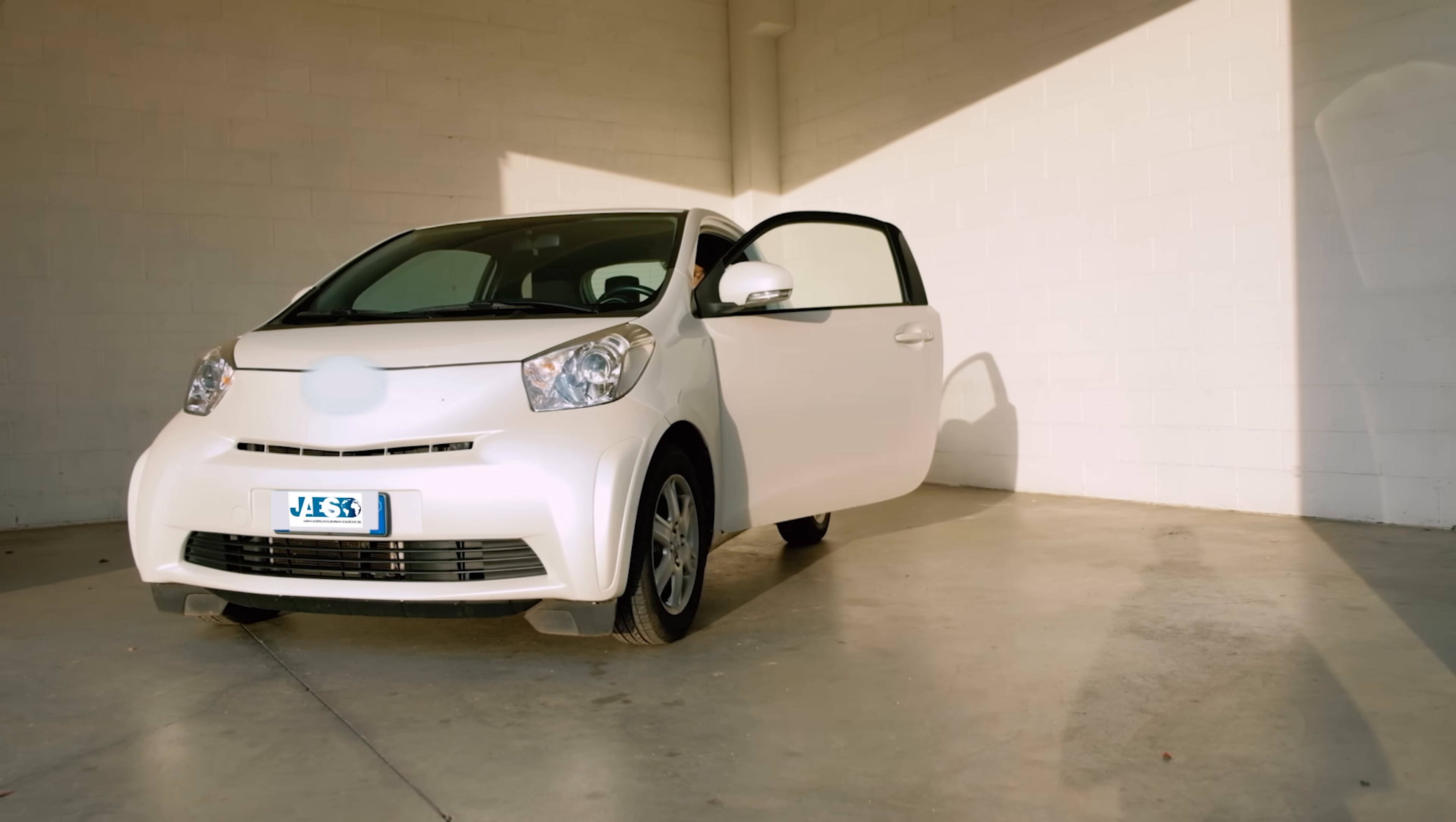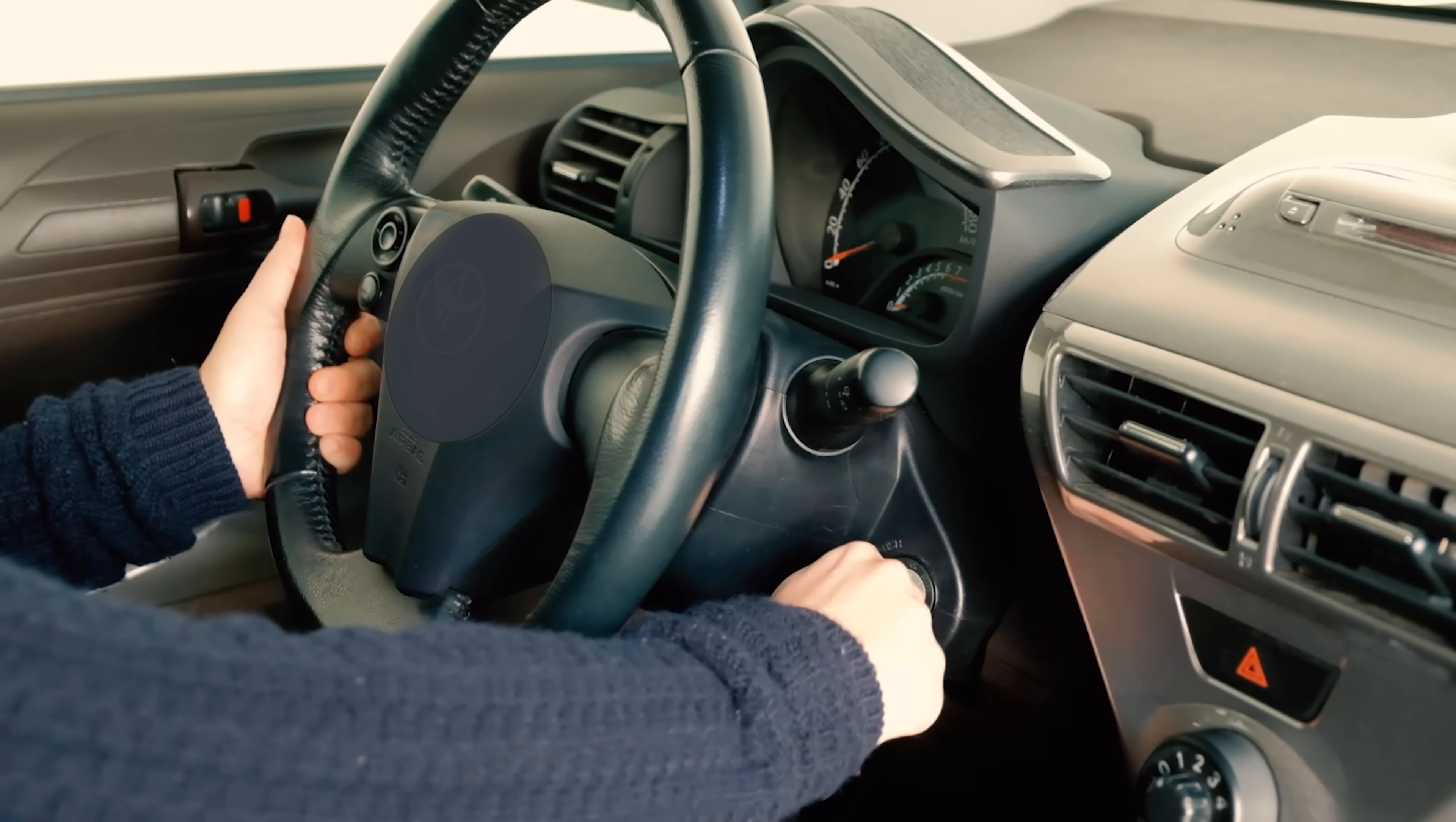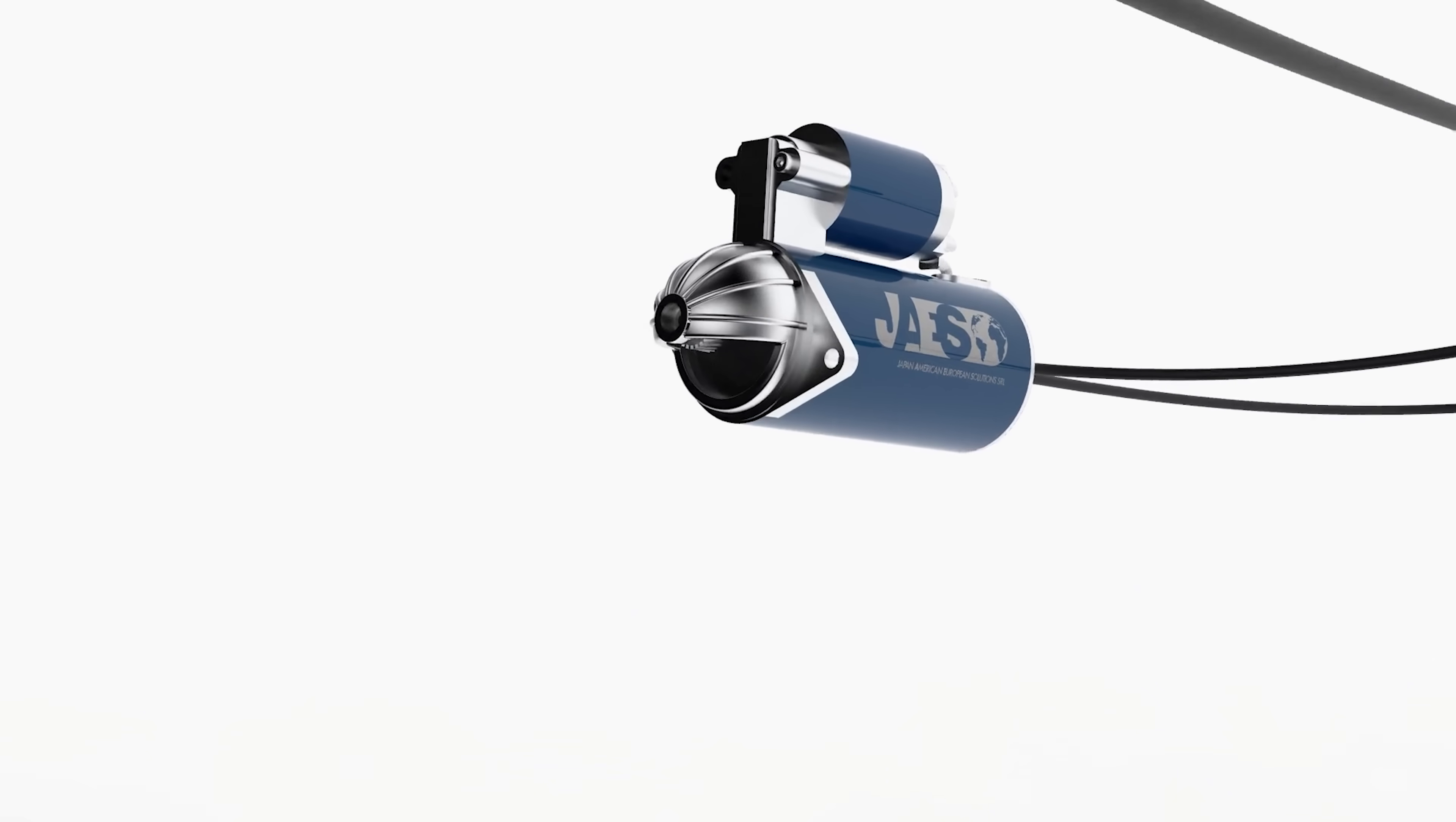When you first get in your car, the first thing you do after putting the seatbelts on is to insert the key in the ignition switch to start the engine. When the switch is turned on, the electric circuit between the battery and the starter motor is closed.